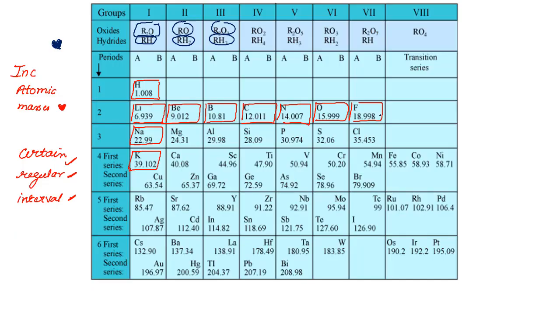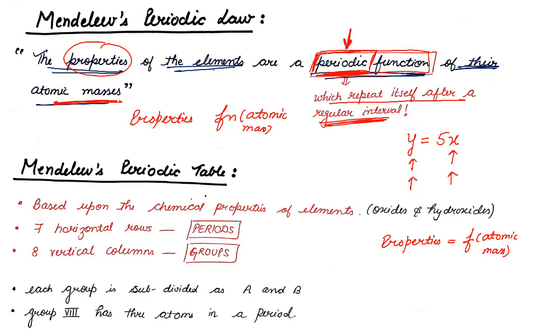It is classified on the basis of oxides and hydride formula as I told you. If I move further, you can see there are basically seven horizontal rows in the Mendeleev's periodic table. These horizontal rows which I talk about. This is first row, second, third, four, five and six. There are actually seven horizontal rows. One is missing here and these seven horizontal rows will be known as periods.